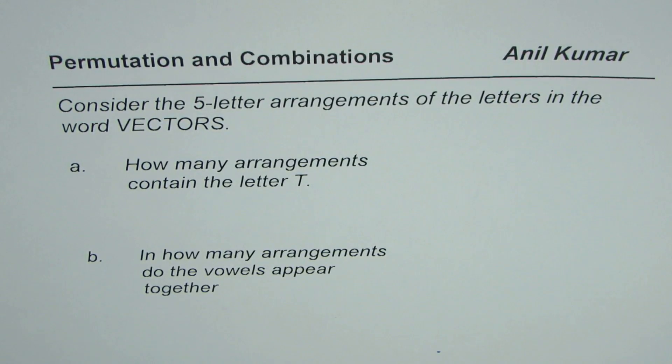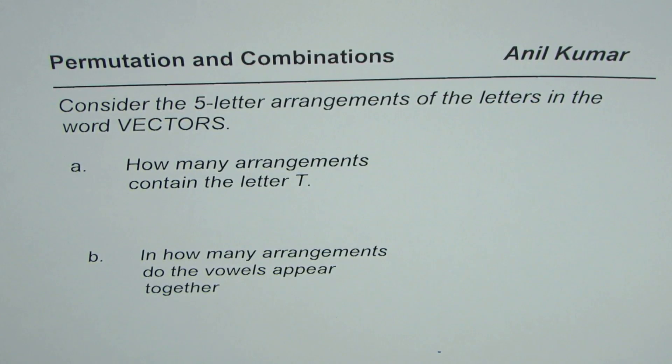I'm Anil Kumar and here is an example of arranging letters in a word. Consider the five-letter arrangements of the letters in the word VECTORS. How many arrangements contain the letter T, and in how many arrangements do the vowels appear together?